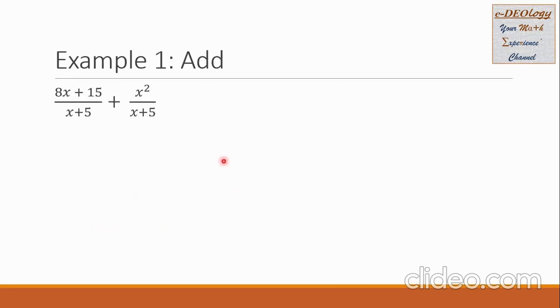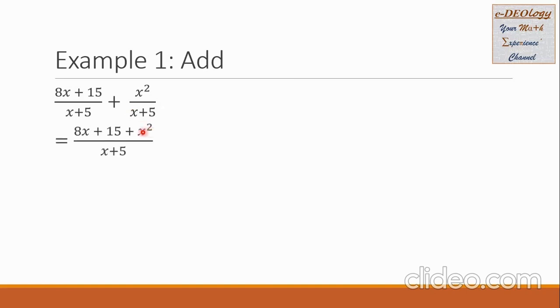Let us have some examples. Example 1: add the rational expressions. The first rational expression is 8x plus 15 all over x plus 5, plus the second, x squared over x plus 5. We can see that our denominators are common, so we can add the numerators. So we have 8x plus 15 plus the second numerator x squared, all over the common denominator x plus 5.